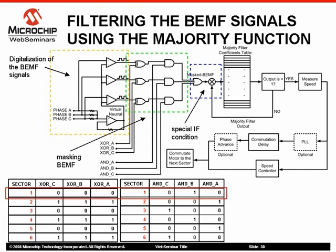If this true-to-false condition is detected, the filter looks for three consecutive false states to validate that a zero-crossing event occurred. A true-to-false condition at the output of the logic test represents a zero-crossing event, and therefore a commutation on the rotor, which occurs after a delay.